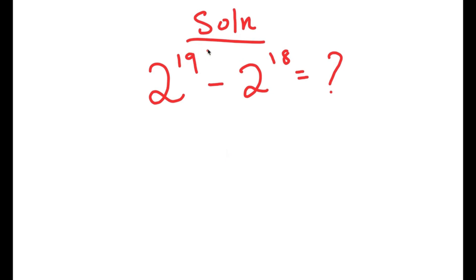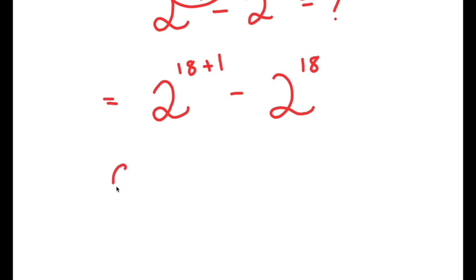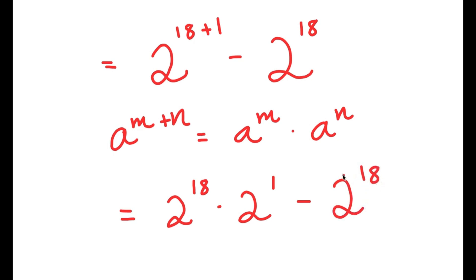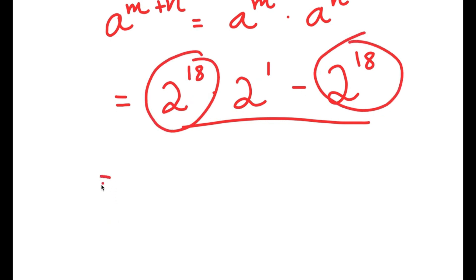I'm going to rewrite 19 as 18 plus 1. So I get 2 to the power of 18 plus 1 minus 2 to the power of 18. And if I have something in the form a to the power of m plus n, this equals a to the power of m times a to the power of n. So 2 to the power of 18 plus 1 equals 2 to the power of 18 times 2 to the power of 1. Now I have that minus 2 to the power of 18.